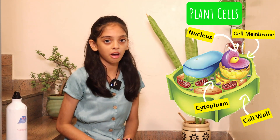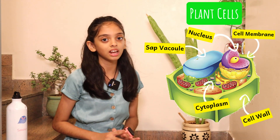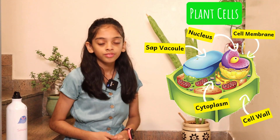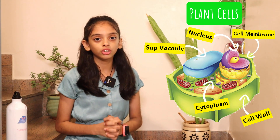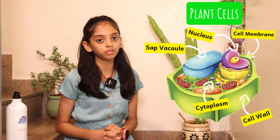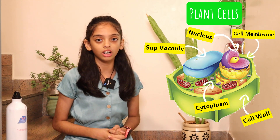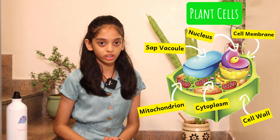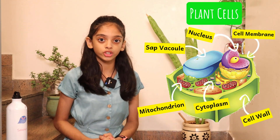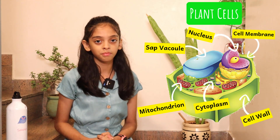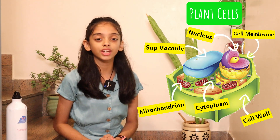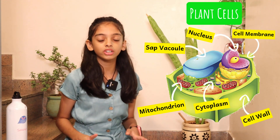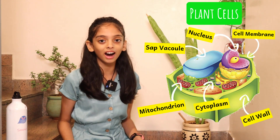Next up is the sap vacuole. The sap vacuole is a large, fluid-filled space inside a cell. It contains sugars and other substances dissolved in water, and this solution is called cell sap. Next up is the mitochondrion — the singular word for mitochondria. Mitochondria releases energy from the nutrients already present in the cell. Mitochondria is exactly like the powerhouse.